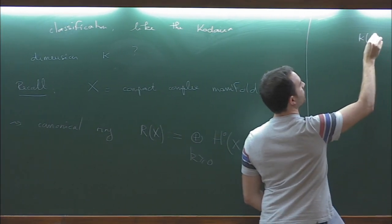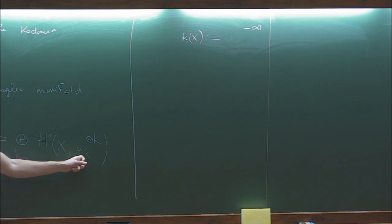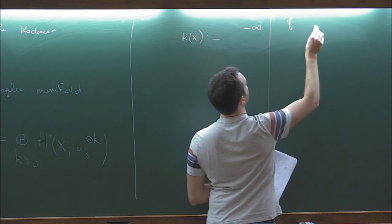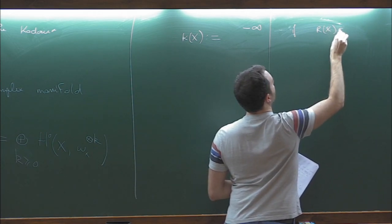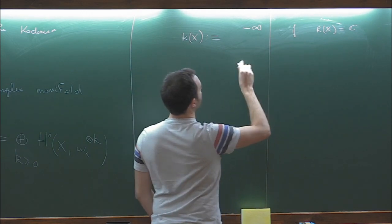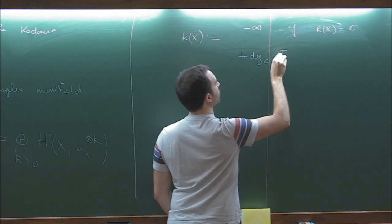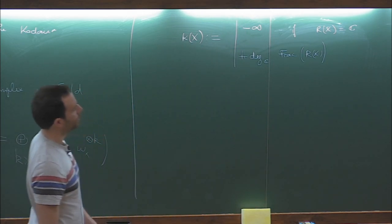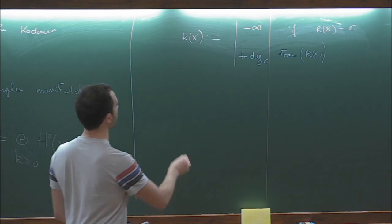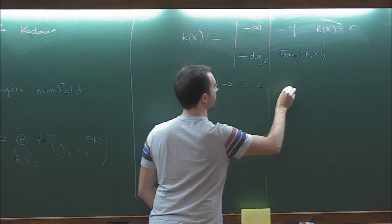The Kodaira dimension κ(X) is defined to measure how big this ring is. When there are no pluridifferentials — when the ring R(X) is as small as possible, meaning just equal to ℂ — we say κ(X) = −∞. Otherwise, we say it's the transcendence degree over ℂ of the fraction field of R. So it gives a number which is either −∞, or 0, 1, up to the dimension of X.